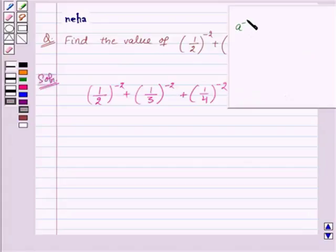We know that a^(-m) is equal to 1/a^m. So here, to find a^(-m), we have taken the reciprocal of a, that is 1/a^m.